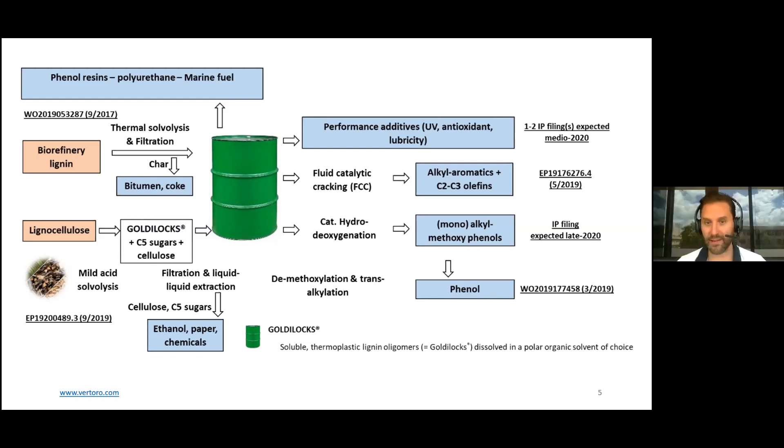Downstream, we're also looking at different applications. After you remove the solvent, you're left with a thermoplastic soluble oligomeric lignin, which can be used as an antioxidant, a lubricity additive, UV stabilizer. If we leave the oligomers in the solvent, methanol specifically, we have some IP to feed it into fluid catalytic crackers, as you would find at most oil refineries. The methanol converts to olefins, as is customary in methanol to olefin chemistry.